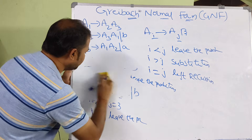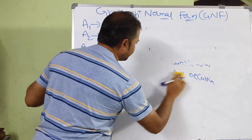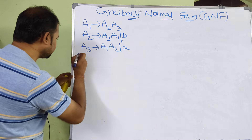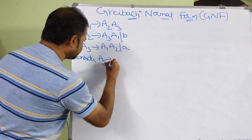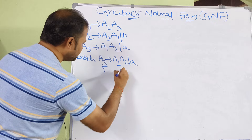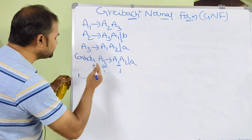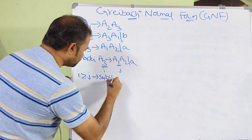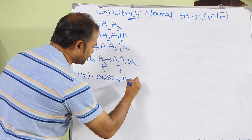Now let us consider the last production: A3 produces A1, A2 or A. Here I value is 3 and J value is 1. Since 3 is greater than 1, I is greater than J. So we have to do the substitution — substitute A1 value in A3. A1 means A2, A3, so in place of A1, we substitute A2, A3.